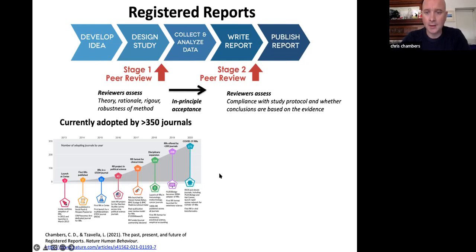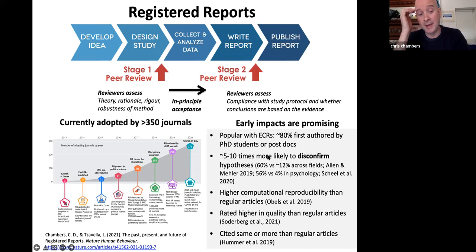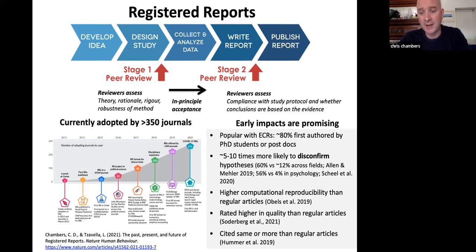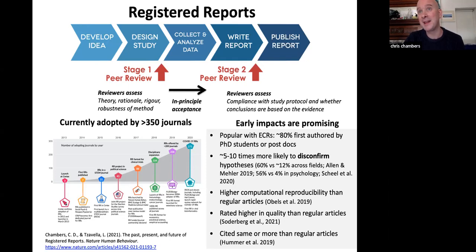We can now start to describe some of the early impacts of the initiative. Registered reports are popular with early career researchers. We're seeing promising signs of bias control — registered reports are around five to ten times more likely to disconfirm hypotheses and report null results, which is a promising signal that we are counteracting the predominant bias in favor of positive results. We also find that registered reports have higher rates of computational reproducibility than regular articles.